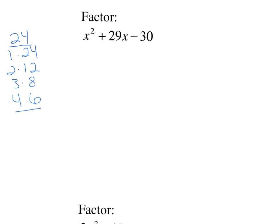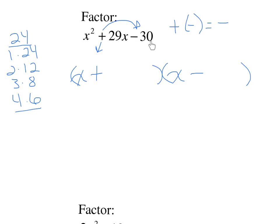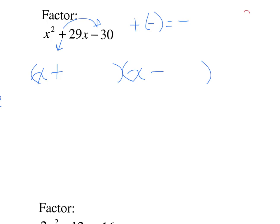Factor x squared plus 29x minus 30. x times x for x squared. Bring the first sign down; multiply the signs: positive times negative makes negative. We have different signs, so look for two numbers that multiply to make 30 but subtract to make 29. 1 times 30: subtracting 1 and 30 gives 29. Write the biggest one first. Positive 30 plus negative 1 makes positive 29, and positive 30 times negative 1 makes negative 30. So the answer is x plus 30 times x minus 1.